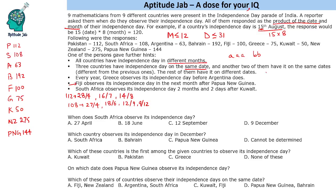Fiji is 100, which can be 25 into 4, 20 into 5, or 10 into 10 — three possibilities. And PNG is 144. Now 144 can be 24 into 6, 18 into 8, 16 into 9, or 12 into 12.